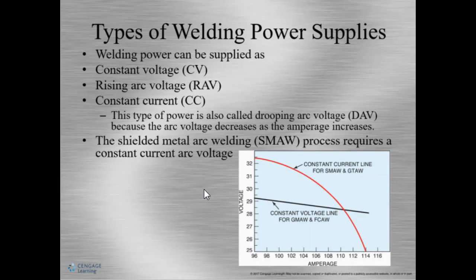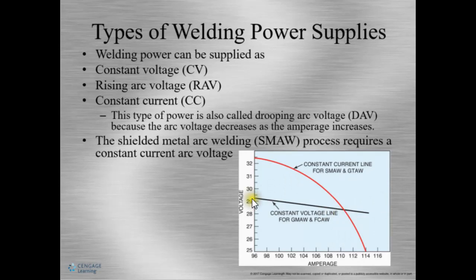The other type of power source is constant current or CC. The amperage and voltage are set, but when the arc is struck, the welding machine tries to maintain the amperage by varying the voltage. This type of power source can be called drooping arc voltage because the voltage decreases when the amperage increases. SMAW and GTAW require constant current welding sources. We can see the difference between the machines in the chart — constant current versus constant voltage, where constant voltage is a little straighter before it starts to drop off.